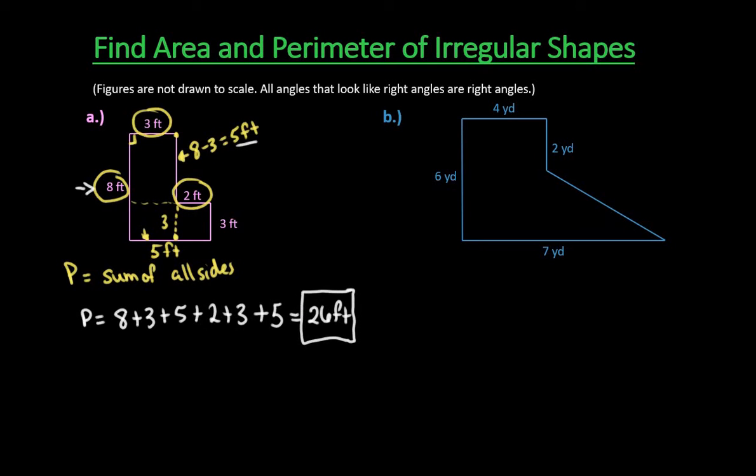The biggest mistake I see when students are doing a problem like this is they forget to find the missing sides and they just add up the eight, three, two, and three that were given, and so that would put you off by ten feet. So that makes a difference to make sure that you find all of the sides.